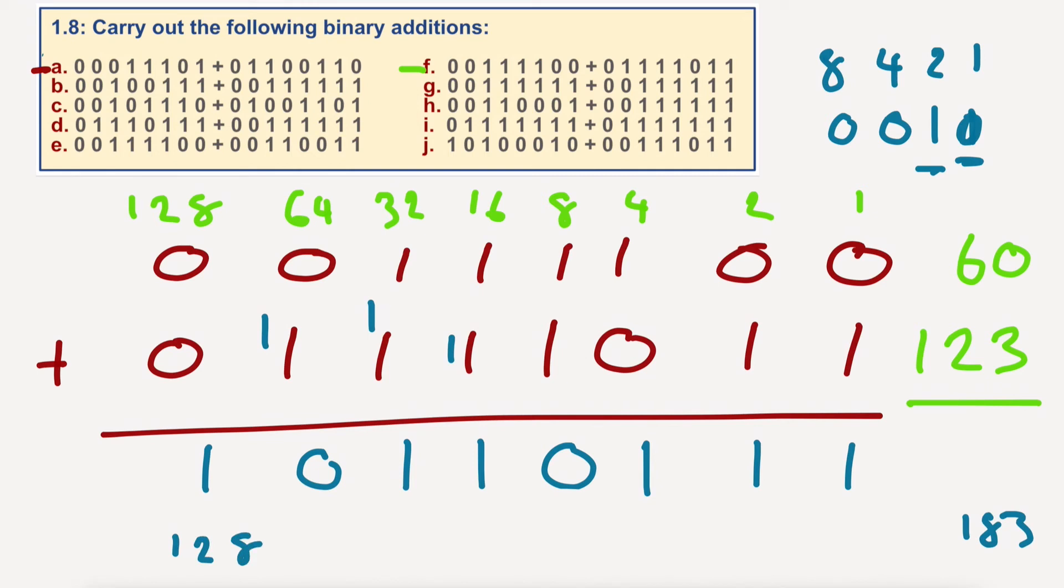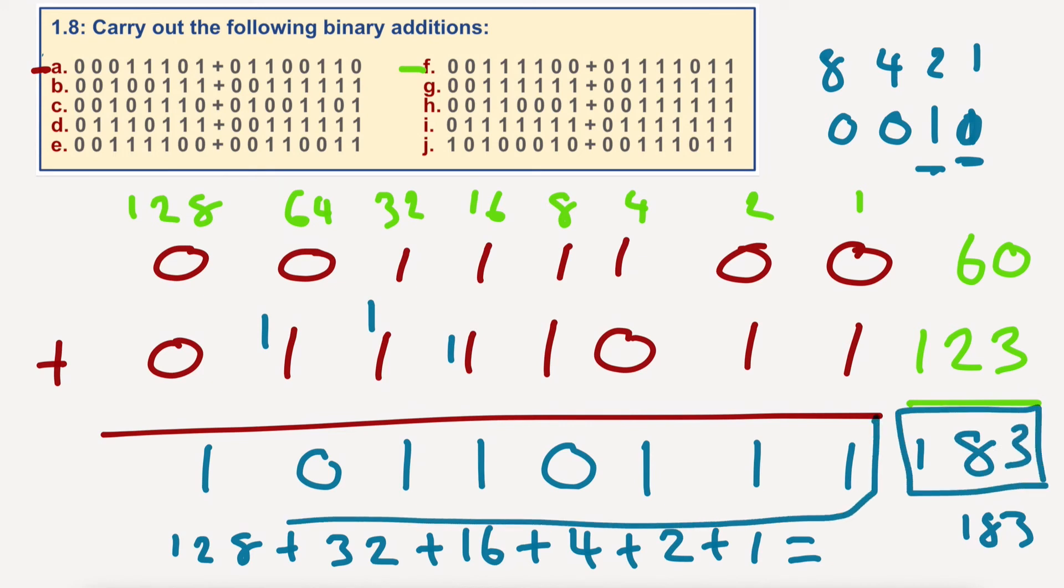So, 128 plus 32, 16, plus 4, plus 2, plus 1, equals 128, 160, 170, 176, 180, 182, 183. So, the correct answer is 183. So, we're correct. So, that is the correct answer for F.